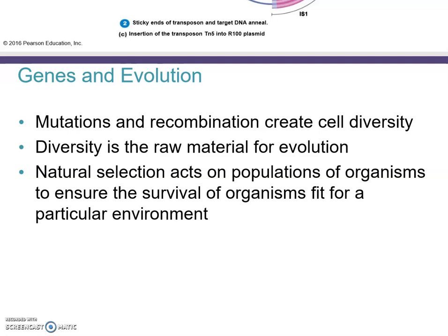Mutations and recombination create diversity, which is generally a desired outcome — there will be many mistakes, but overall it can move a species forward in terms of reproducing and outcompeting other species. This diversity is basically the driving force for evolution. Natural selection acts on populations of organisms to ensure the survival of organisms fit for a particular environment. Environmental factors plus mutations are the driving force for genetic change.